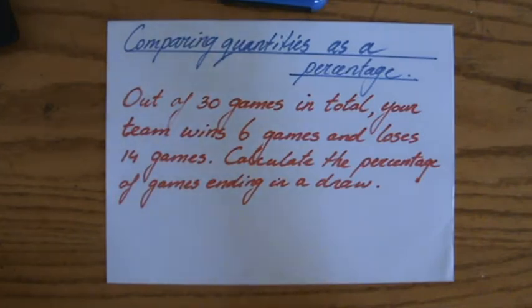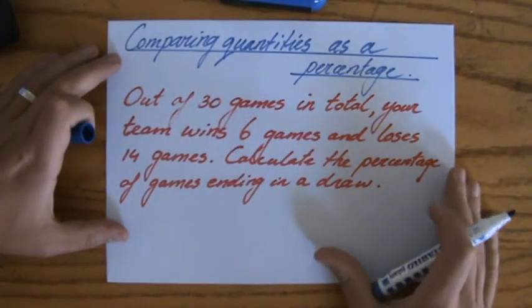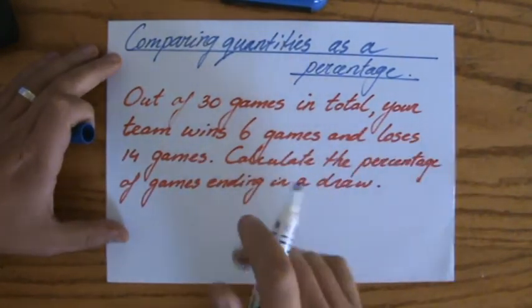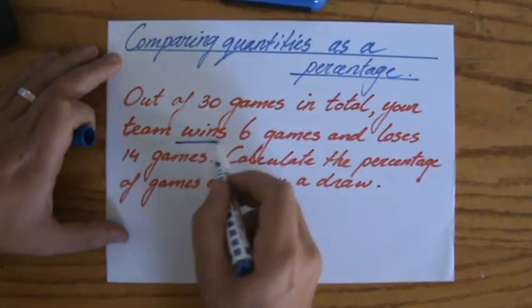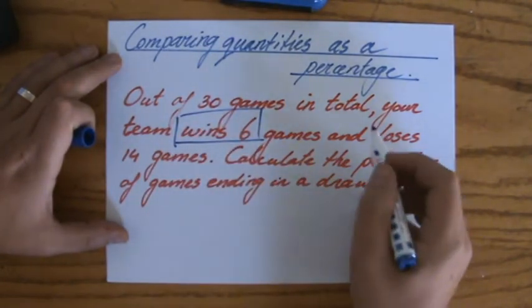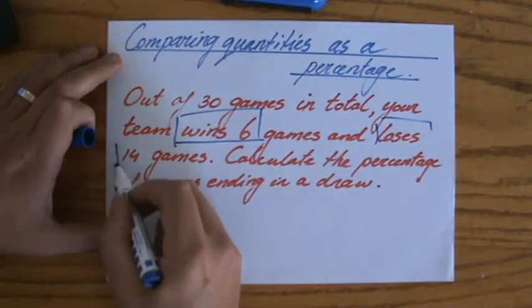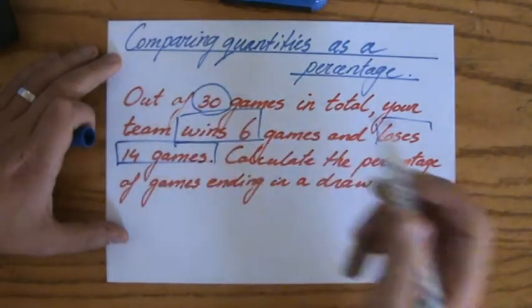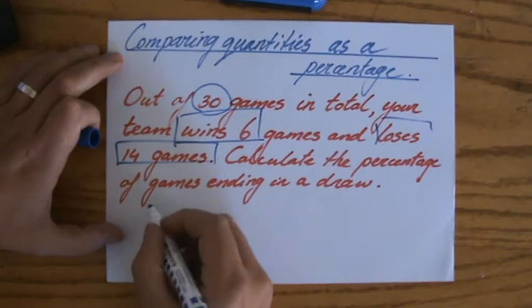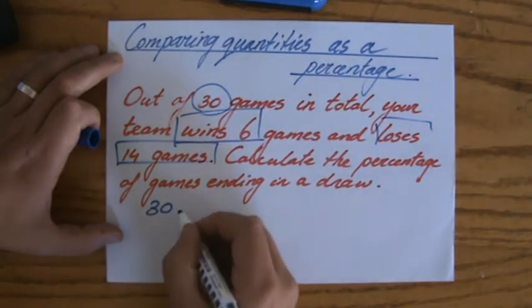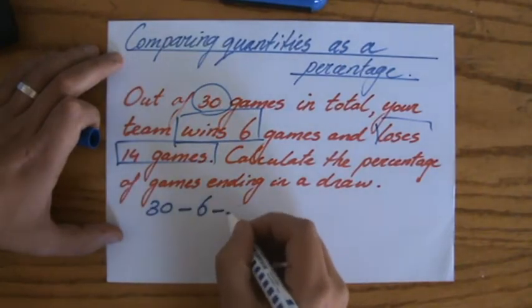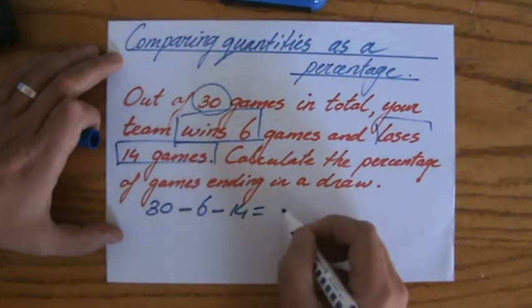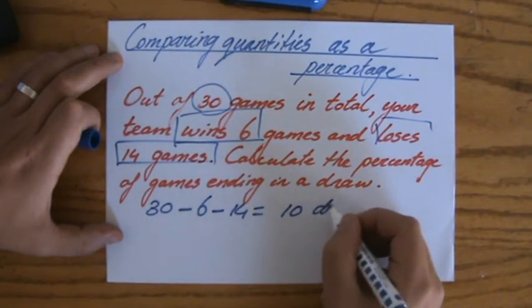Okay, well of course you show as much work as you can. So you can either win and you have won 6, you can lose and you lost 14 out of 30 games in total. So how many draws did I have? Well that's 30, take away 6, take away 14, and that is then going to be 10. So 10 draws.